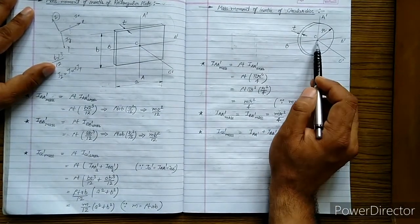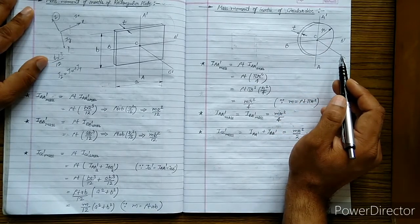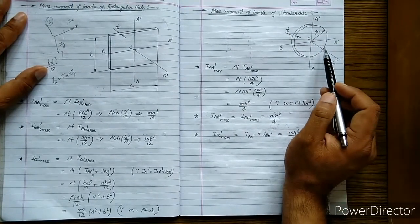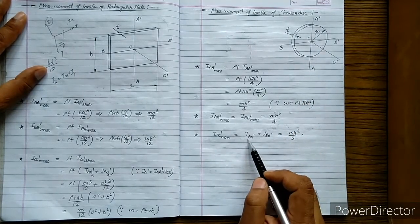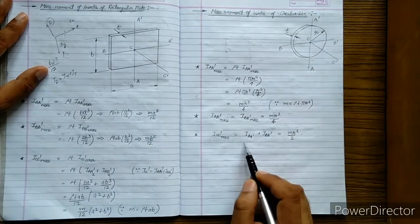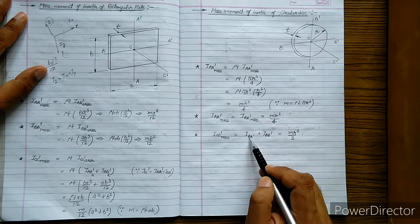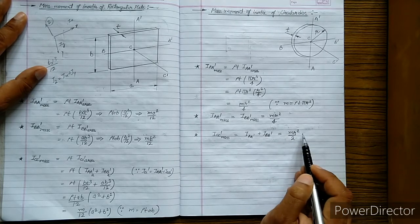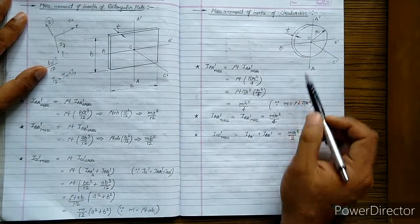Now, to find the mass moment of inertia of the circular disc about the axis perpendicular to its plane, we apply the perpendicular axis theorem. The mass moment of inertia about the axis perpendicular to the plane equals the mass moment of inertia about AA' plus that about BB'. Substituting Mr²/4 + Mr²/4, we get the answer Mr²/2. This is the mass moment of inertia of the circular disc about the axis perpendicular to its own plane.